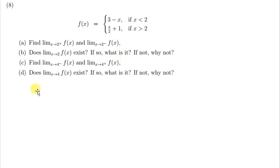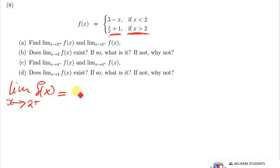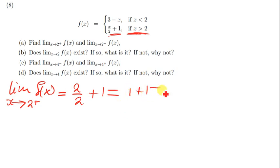For this question it's straightforward. When we look at the positive side of 2, we're talking about numbers that are greater than 2, hence we're going to use the function x over 2 plus 1. So the limit of f of x when x is approaching the positive side of 2 — we replace x with 2, so we get 2 over 2 plus 1, which gives us 1 plus 1, which is equal to 2.